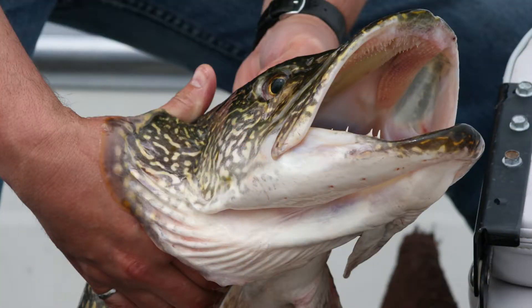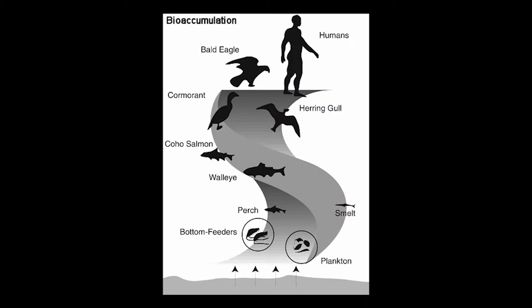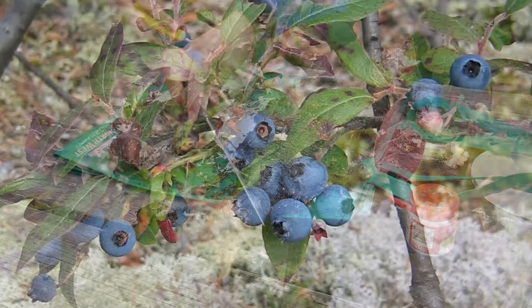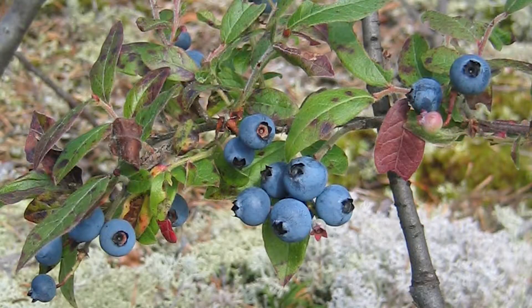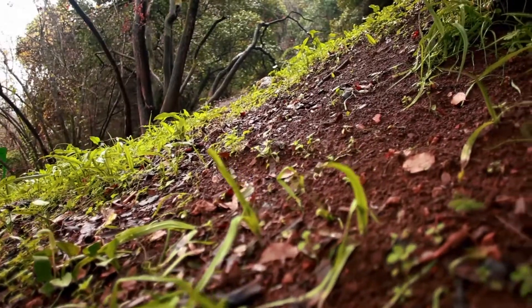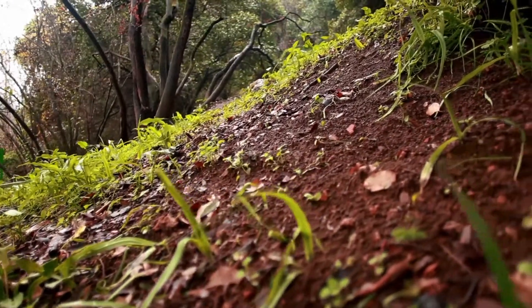For example, when a large fish eats smaller fish from water contaminated by lead, lead can build up in the larger fish's body. Then, if we eat that larger fish, lead can build up in our body. Lead can also be found in plants that we eat if the soil where they grew is contaminated by lead.